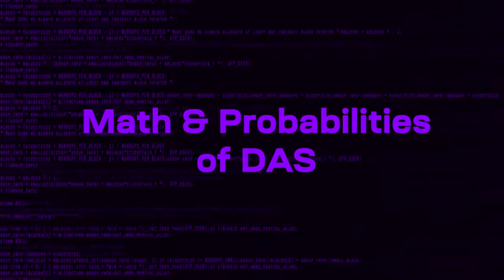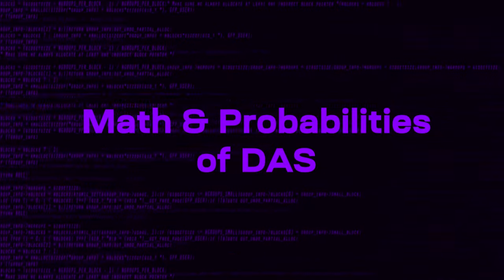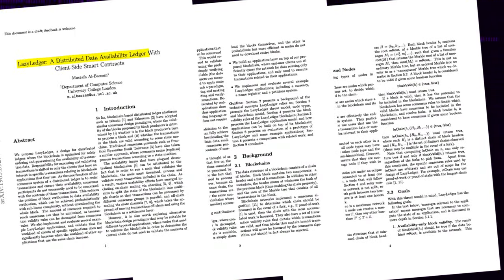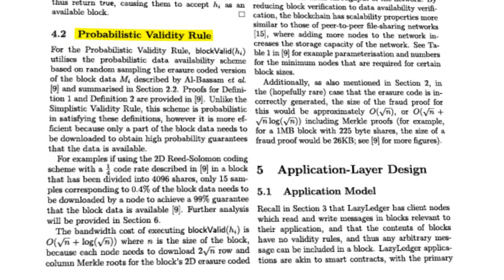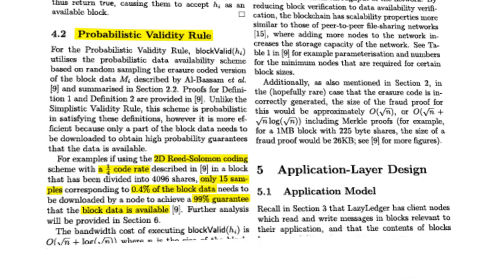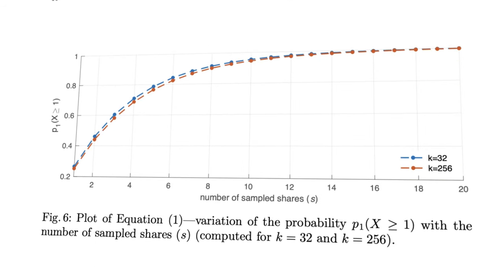Now let's go through the math and probabilities of data availability for light clients. In page 6 of the Lazy Ledger white paper, it talks about the probabilistic validity rule. Using 2D Reed-Solomon coding at a quarter rate, it only requires 15 samples — or 0.04% of a downloaded block — to have a 99% guarantee that data is available. And if you wanted more assurance, you could always sample more, meaning the scaling properties of data availability sampling are lightweight and scalable for any flexible range.